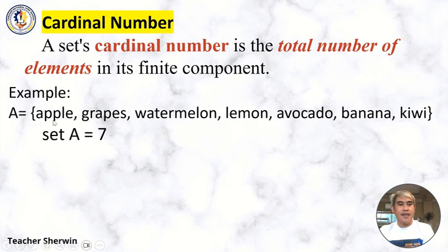For example: set A is composed of apple, grapes, watermelon, lemon, avocado, banana, and kiwi. So set A, cardinal number is seven. Let's count: one, two, three, four, five, six, seven. So the cardinal number is seven for set A.